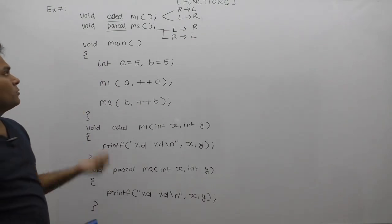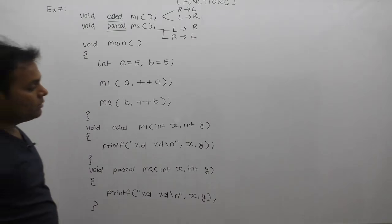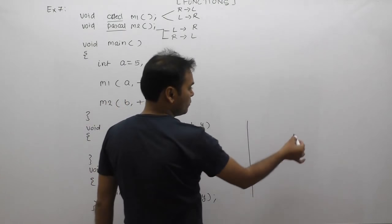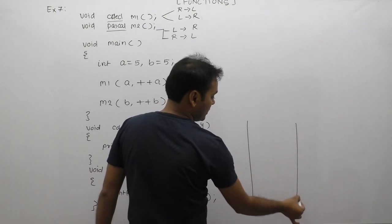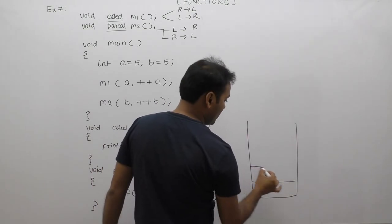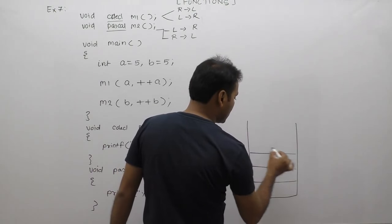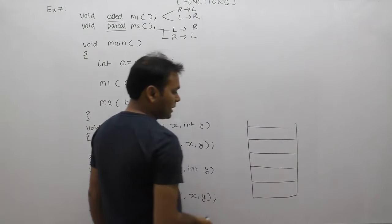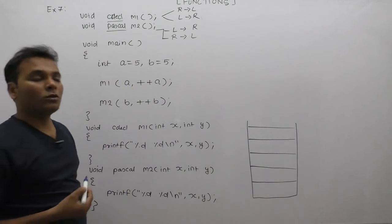First, when any function is called, the function is always loaded on top of the stack memory. Loading a function into the stack means allocating memory space for auto or local variables of the function.